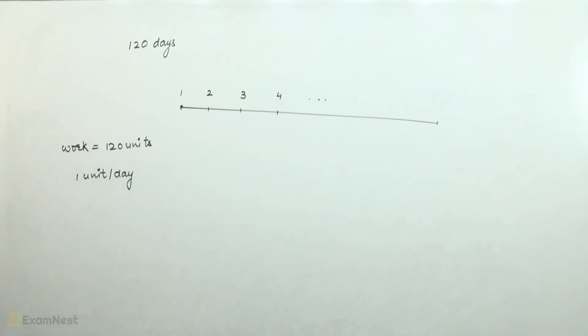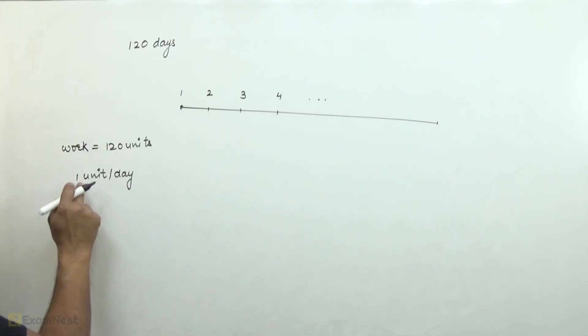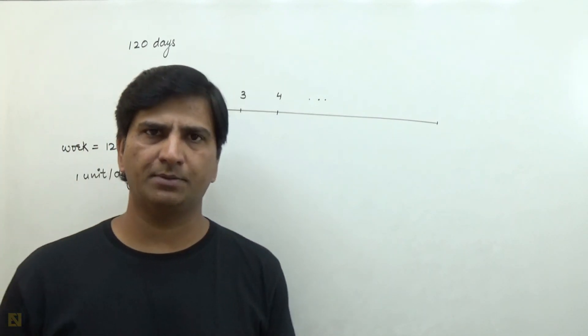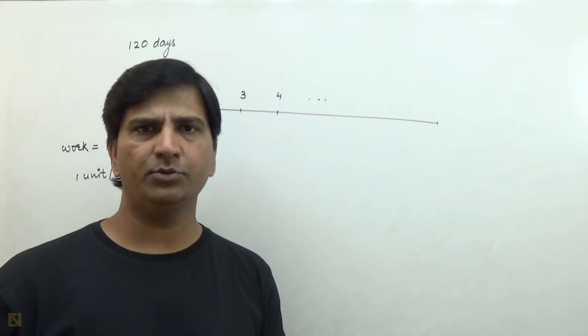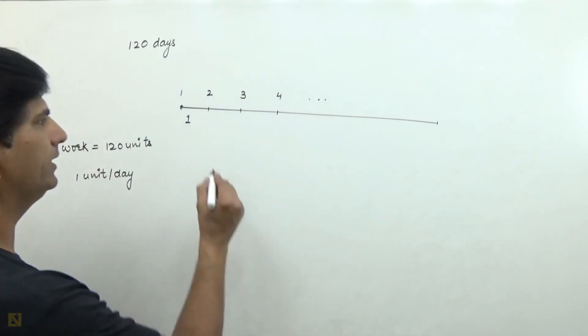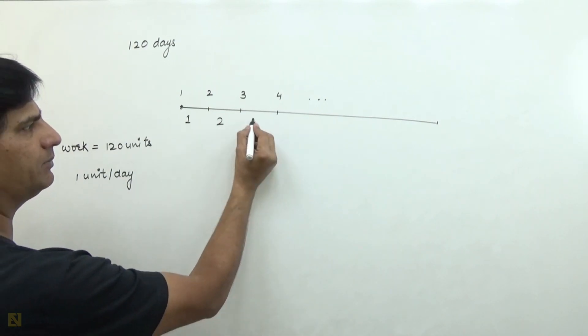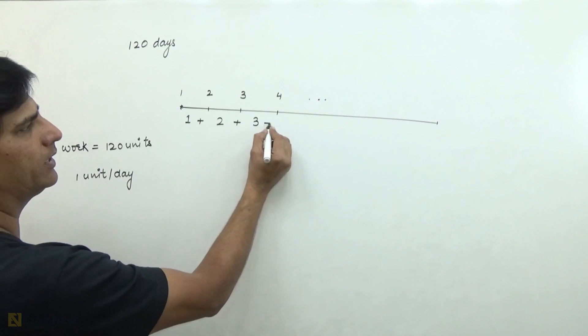Now, first day, only 1 person is working, so he contributed 1 unit of work in 1 day. Second day, 2 persons are working. Each person does 1 unit of work, so together they do 2 units of work. Third day, 3 persons are working, so together they do 3 units of work.